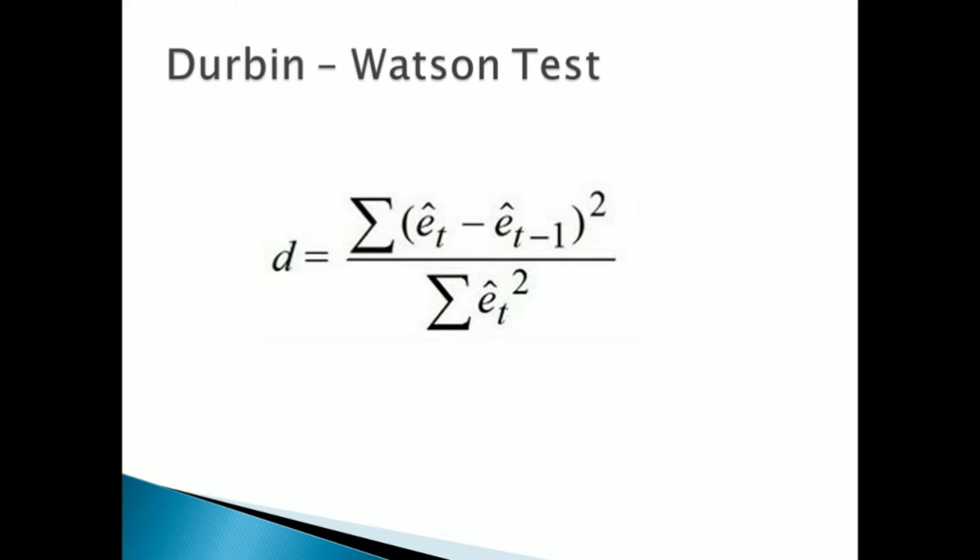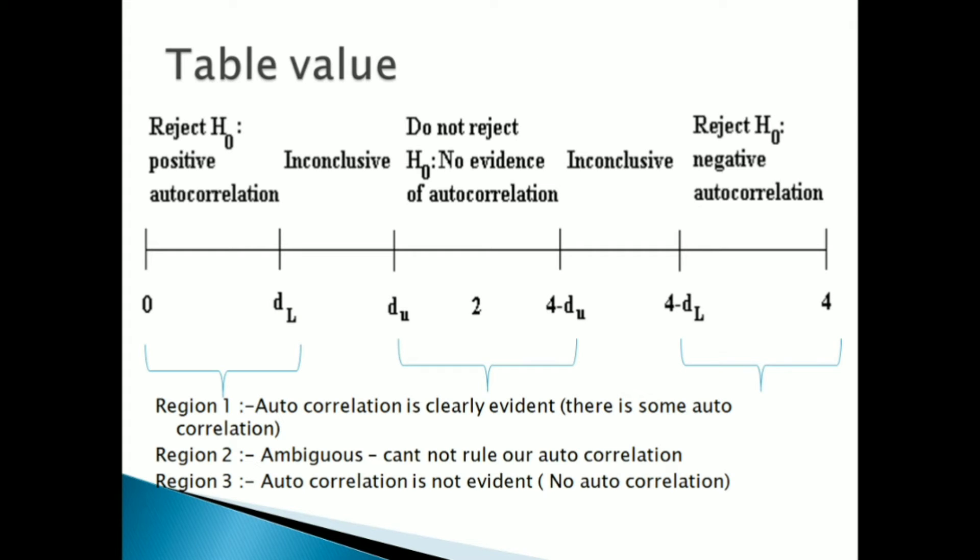This is the formula for Durbin-Watson test, denoted by D. D equals summation of (error t minus error t-1) squared divided by summation of error t squared. This is the table value of Durbin-Watson test.